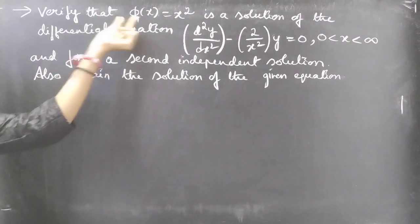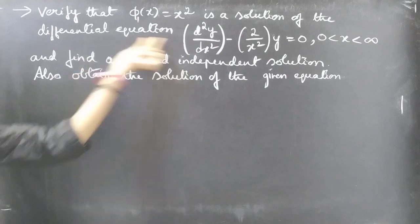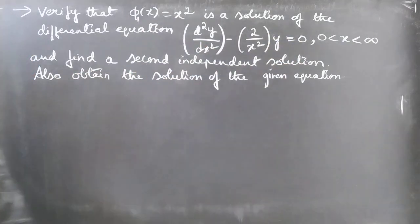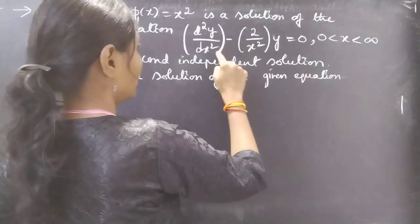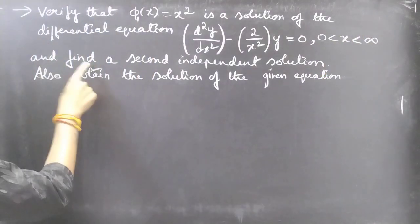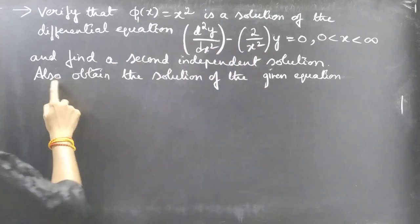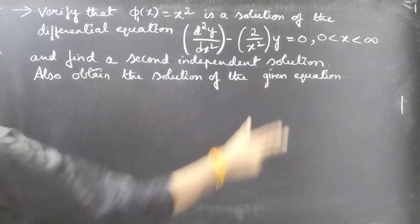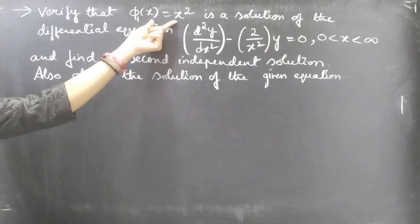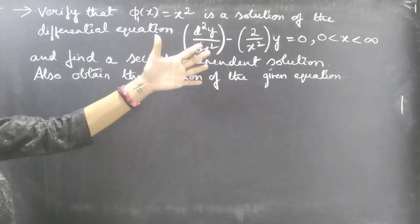Problem: Verify that φ₁(x) = x² is a solution of the differential equation d²y/dx² − (2/x²)y = 0, where the independent variable x lies between 0 and infinity. Also find a second independent solution and obtain the general solution of the given equation.